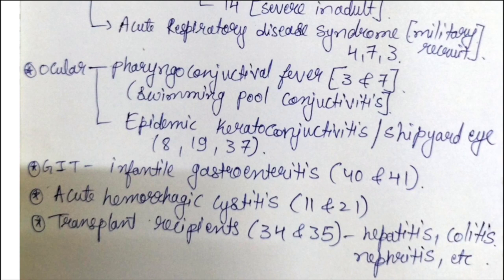In the GIT, adenovirus causes infantile gastroenteritis — inflammation in infants — caused by serotypes 40 and 41. For the urinary bladder, acute hemorrhagic cystitis is caused by serotypes 11 and 21. In transplant recipients, serotypes 34 and 35 cause hepatitis, colitis, and nephritis.